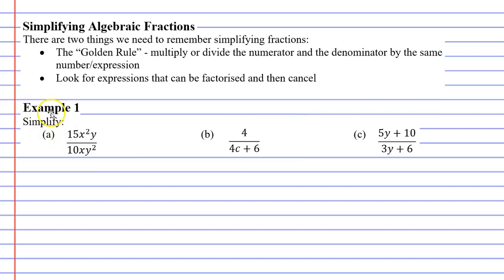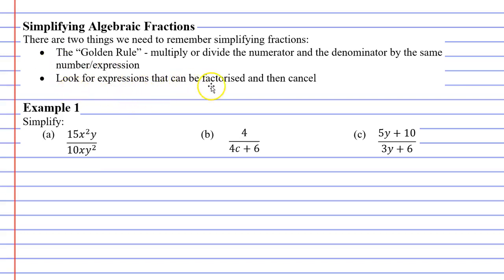Before we get into the example, I've written down a couple of dot points. The first is the golden rule, which is to multiply or divide the numerator and the denominator by the same number. The second dot point says to look for expressions that can be factorized and then cancel. These two dot points are actually pretty much one and the same.